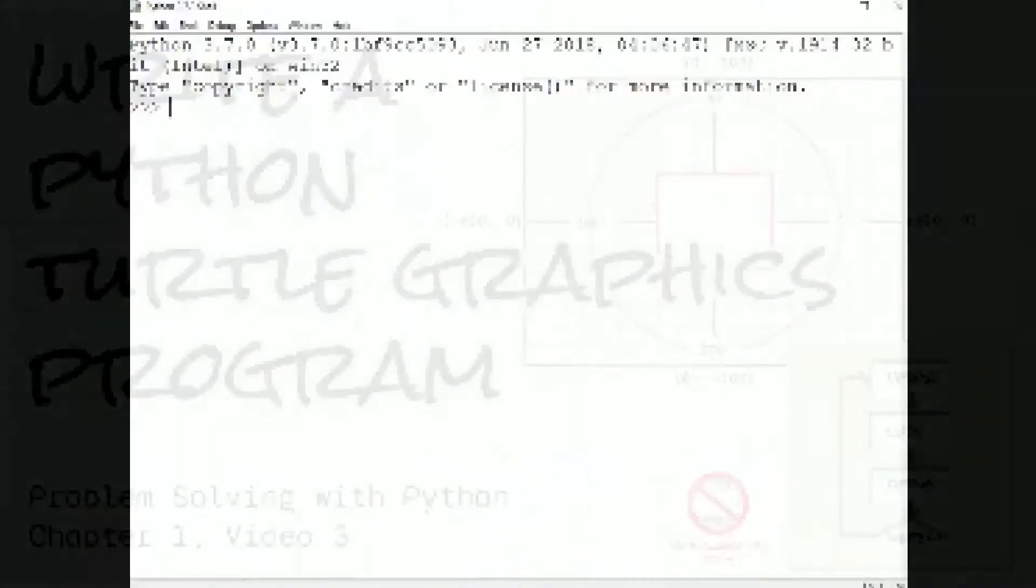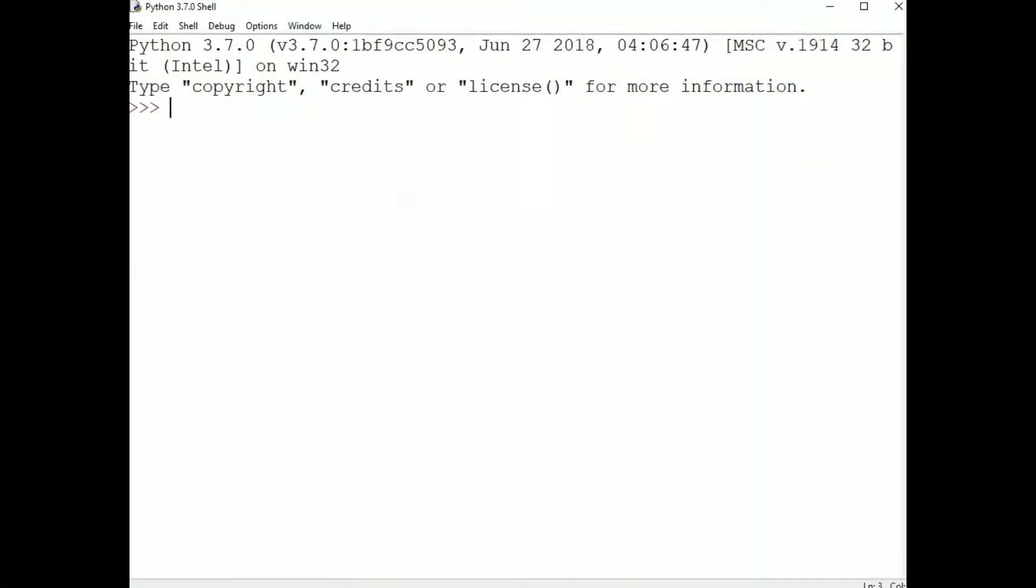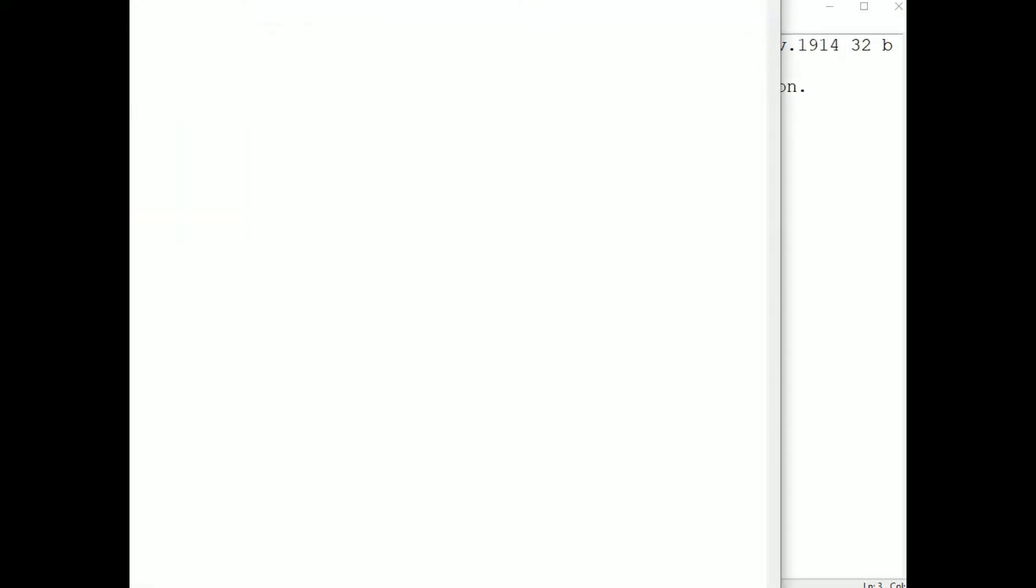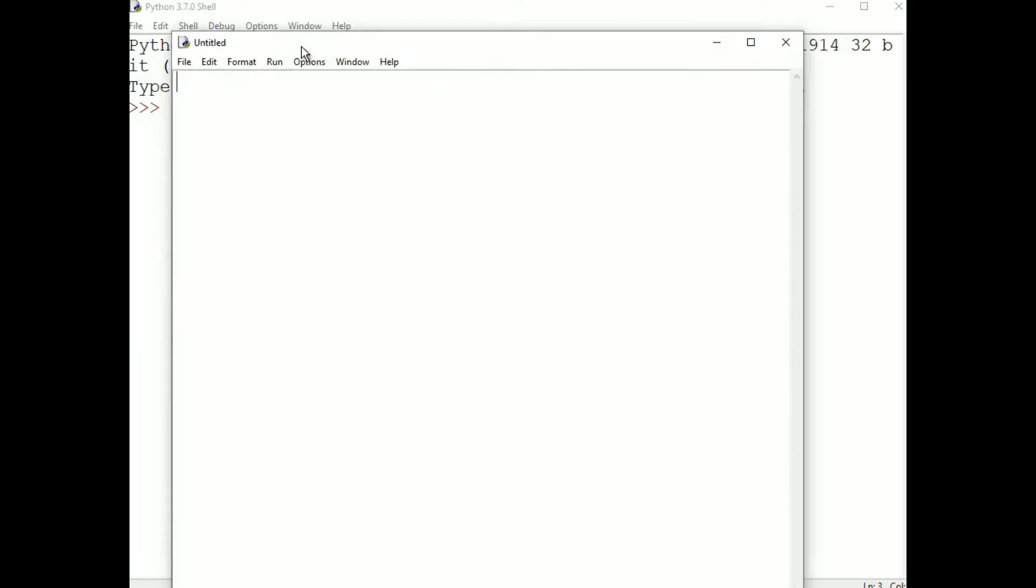Recall that Idle has two modes, Immediate Mode and Script Mode. You can execute Turtle commands in Immediate Mode, but we're going to write a script because that will allow us to write many lines of code at once, make small or large changes, and execute them as many times as we want. So from the Idle console, we go to the File menu and choose New File, and we get a window which is a script window.